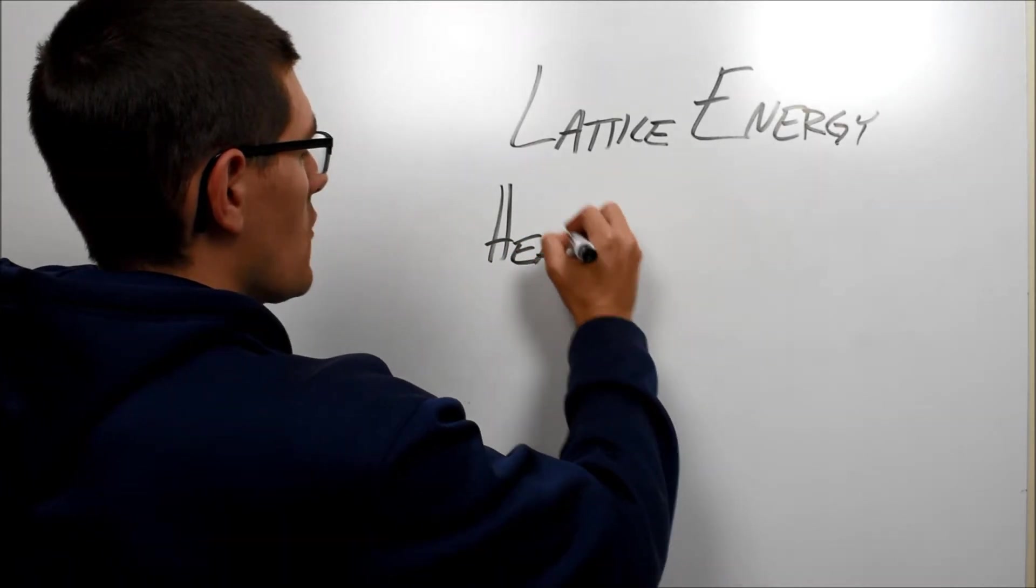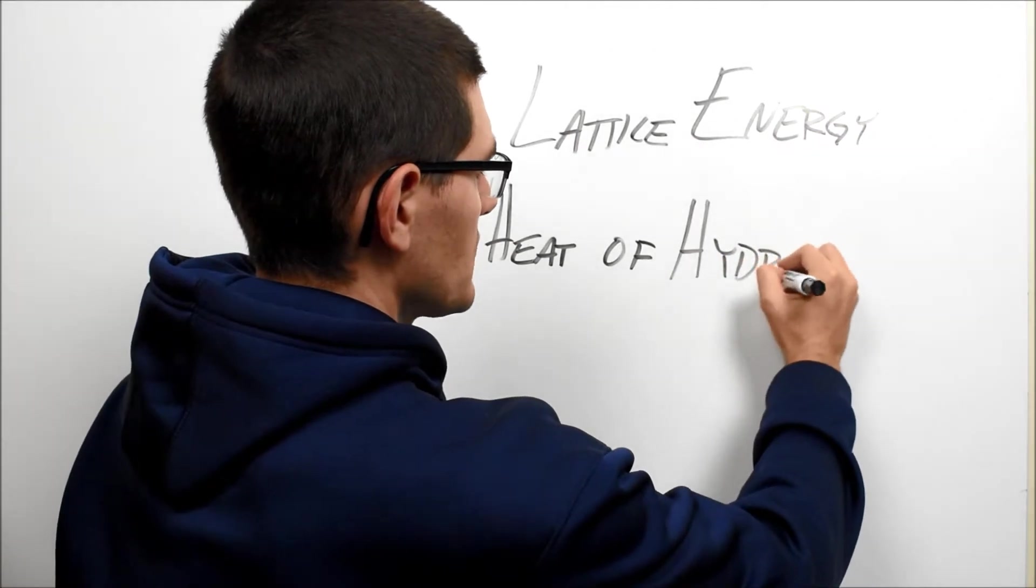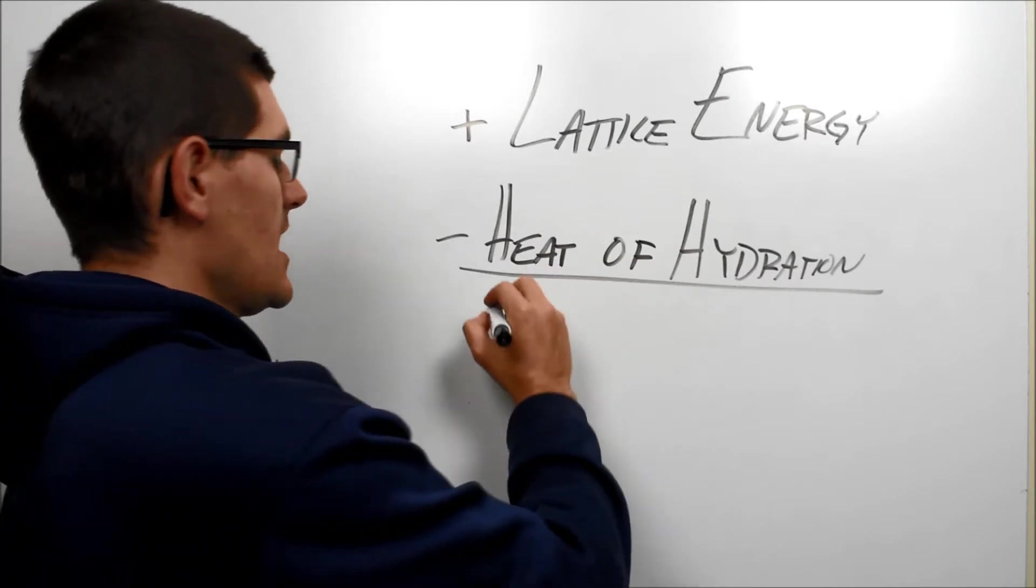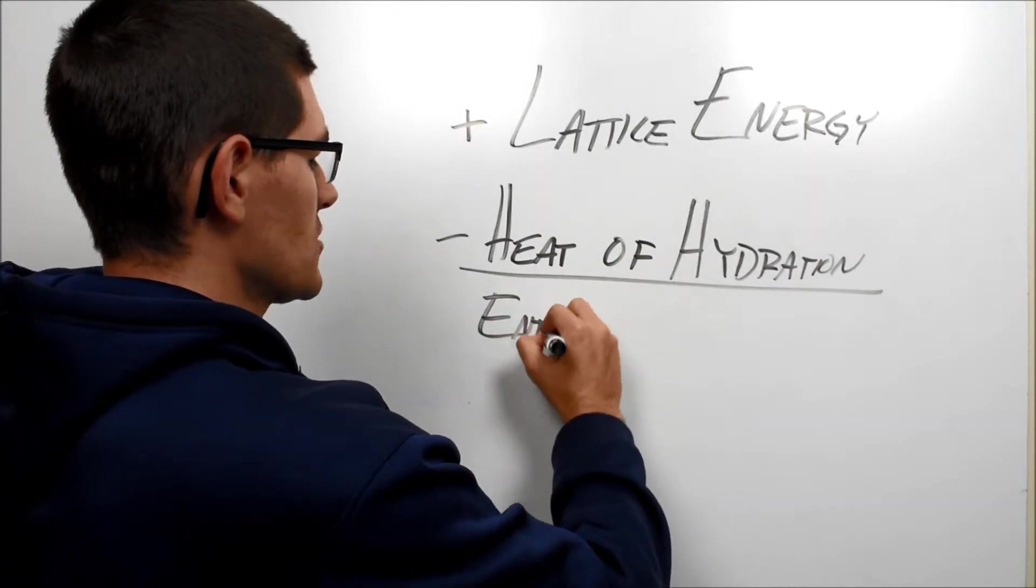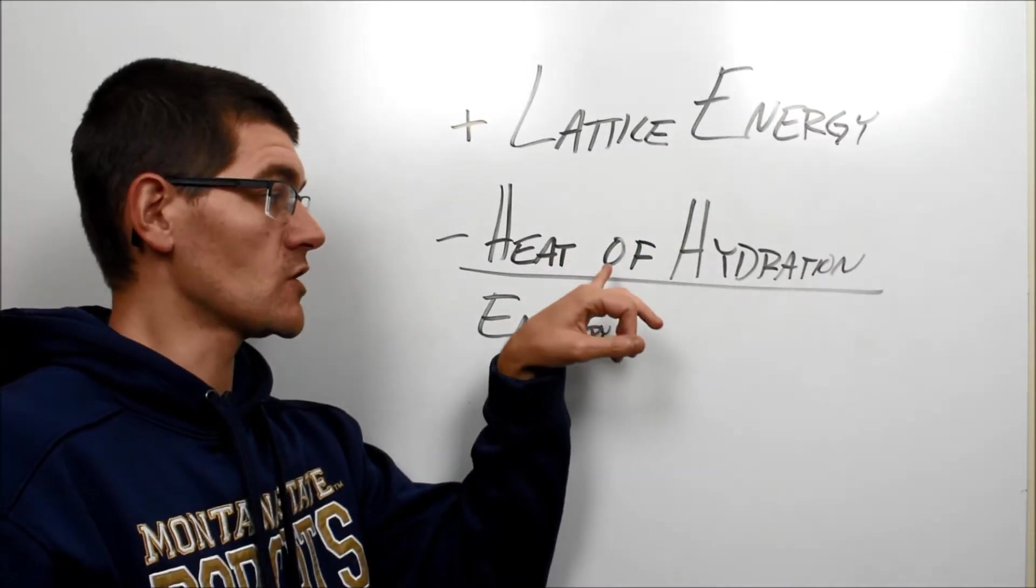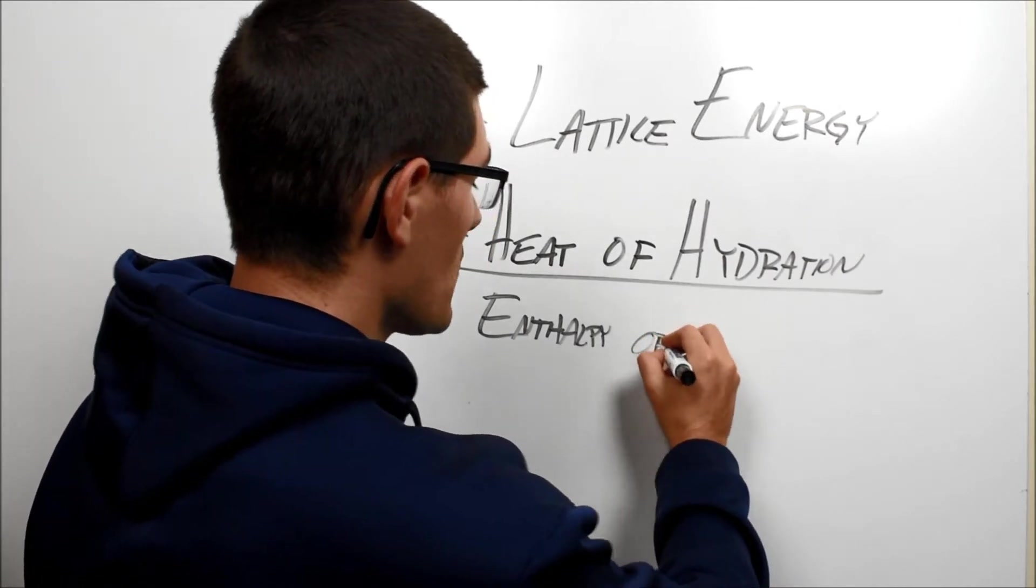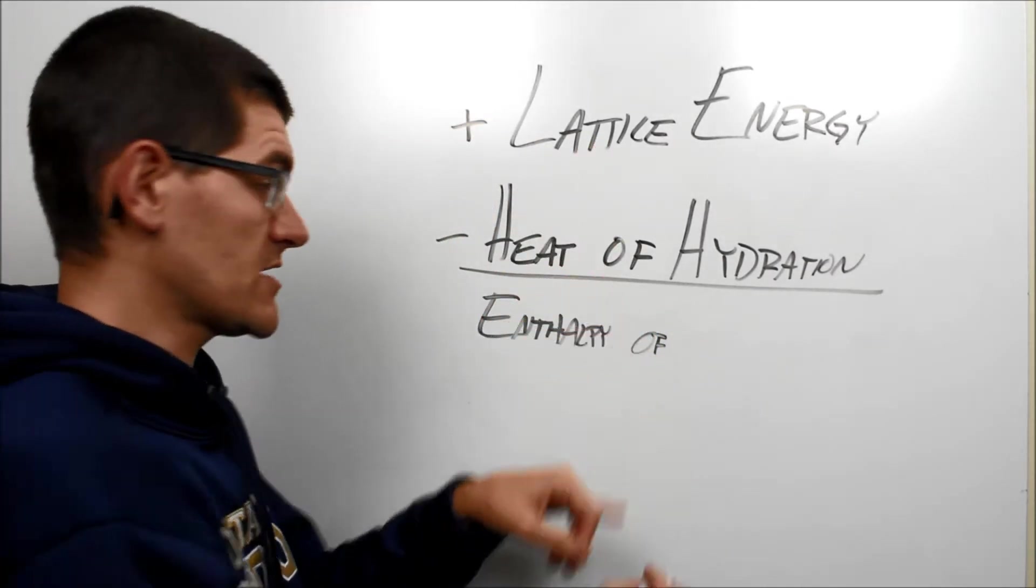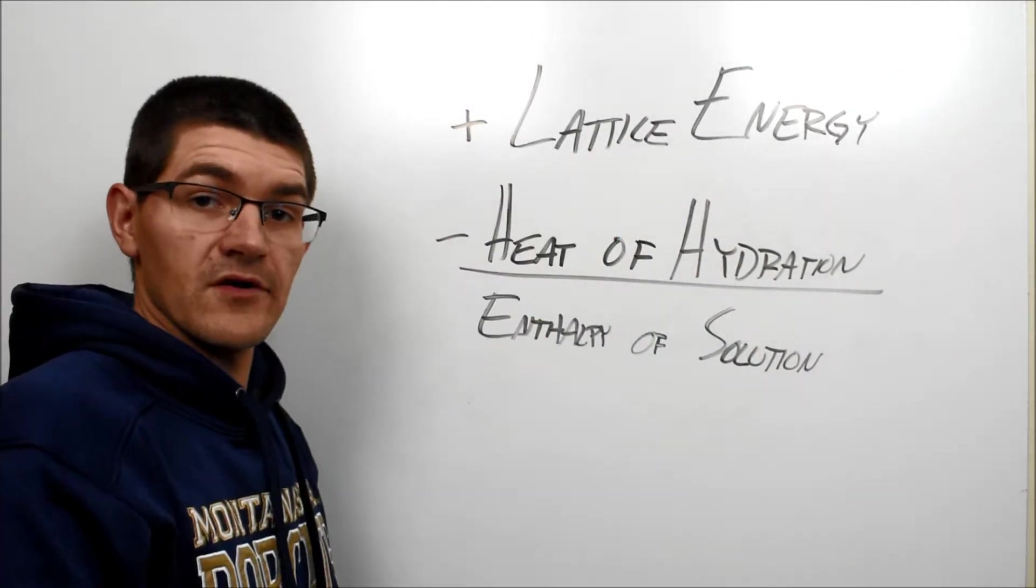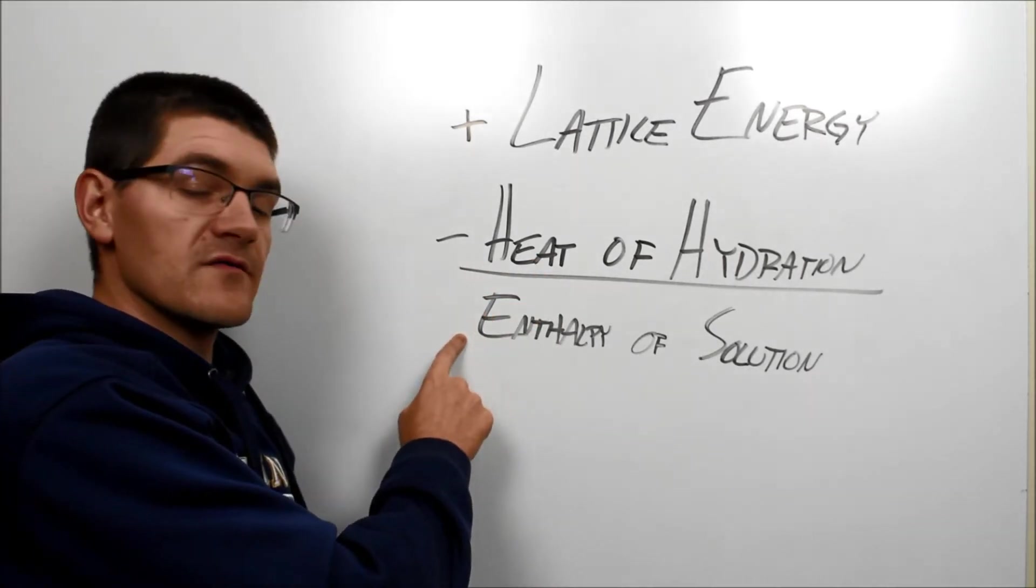As we said, the lattice energy is always positive, while the heat of hydration is always negative. So, it becomes a very simple addition there. Subtract the heat of hydration from the lattice energy, and you get the enthalpy of solution. If your enthalpy of solution is positive, meaning the lattice energy magnitude is larger than the magnitude of the heat of hydration, you get an endothermic process, so ammonium nitrate, higher lattice energy than the heat of hydration. On the flip side, with something like calcium chloride, the lattice energy is not very large, so the heat of hydration is much larger, which means the enthalpy of solution will be negative, meaning hot pack.